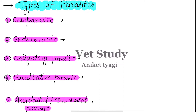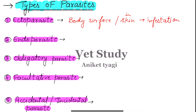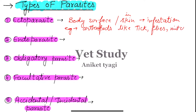The first one is the ectoparasite. Ectoparasites are those parasites which basically live on the body surface or inside the skin. The term used for this type of parasitism is infestation. Examples are arthropods like ticks, flies, and mites. These are all ectoparasites because they live on the surface or inside the skin.